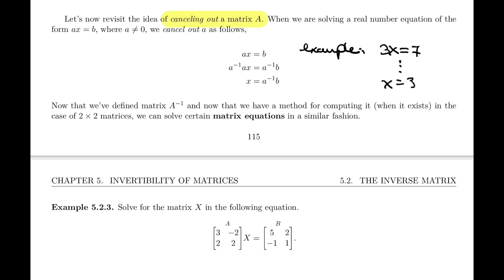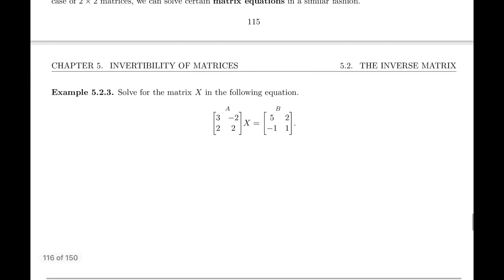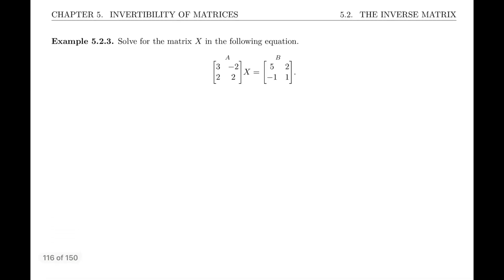Most of us are simply going to write as 7 thirds. But what happened in the middle to get from 3x equals 7 to x equals 3 inverse times 7? There was this step of multiplying by the inverse on both sides. Let's do that with a matrix equation.